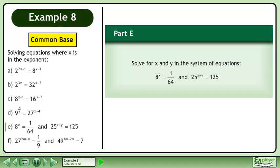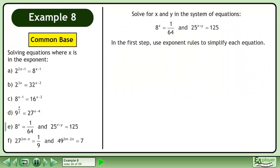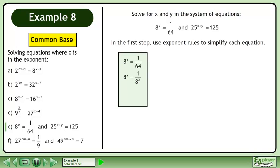In part e, we have a system of equations: and 25 to the power of x plus y equals 125. Use exponent rules to simplify each equation. Rewrite the first equation: 64 equals 8 squared, and 1 over 8 squared equals 8 to the power of negative 2. Set the exponents equal to each other to get x equals negative 2.